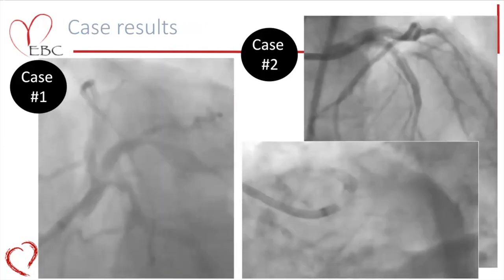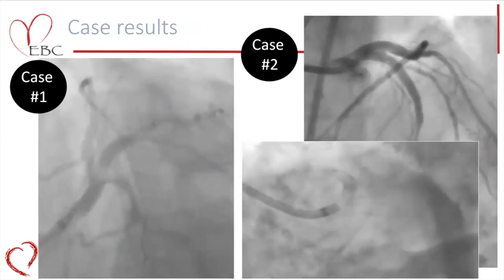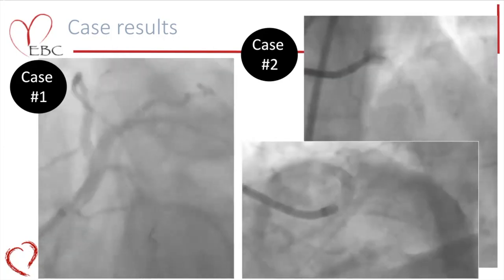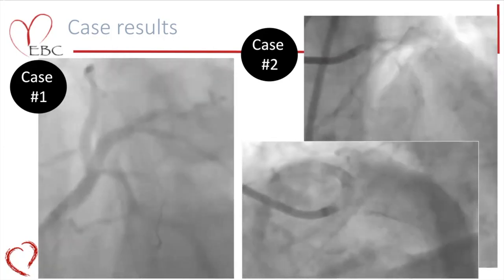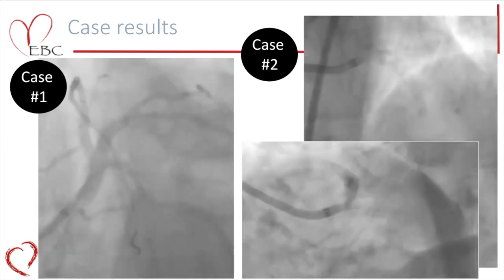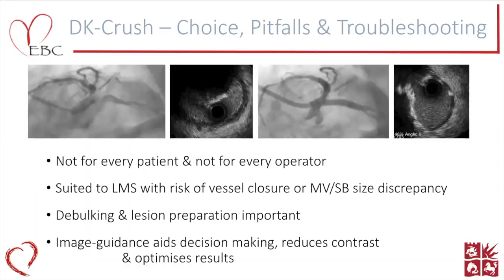These are the outcomes achieved in both the examples I've shared — through IVUS guidance, we got fantastic results with incredible minimum stent area in all elements of the bifurcation. In summary: DK crush is an excellent technique but not for every patient, and not for every operator either. It's well suited to left main, particularly where there's a risk of vessel closure or significant size discrepancy. Debulking and lesion preparation are critically important for the success of all two-stent techniques, and image guidance plays a key role. Thank you for your attention.